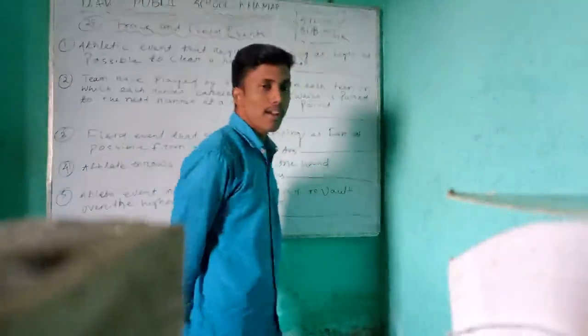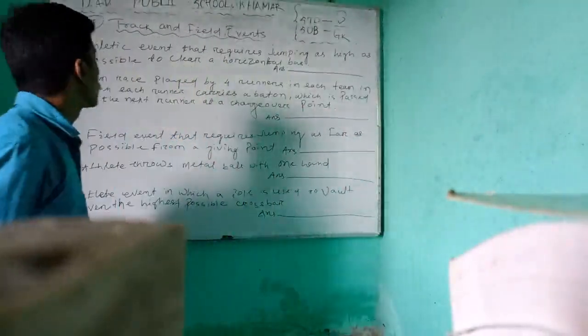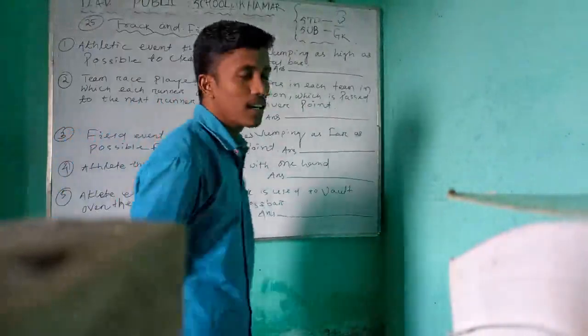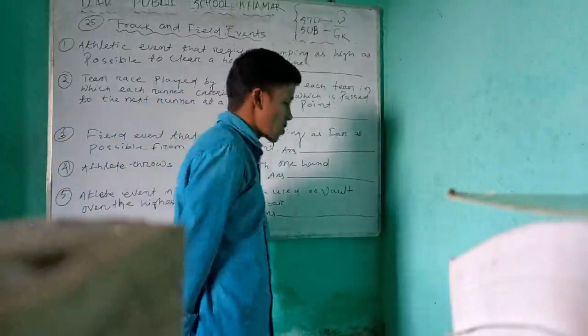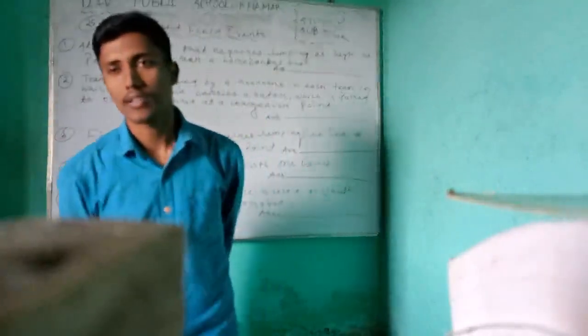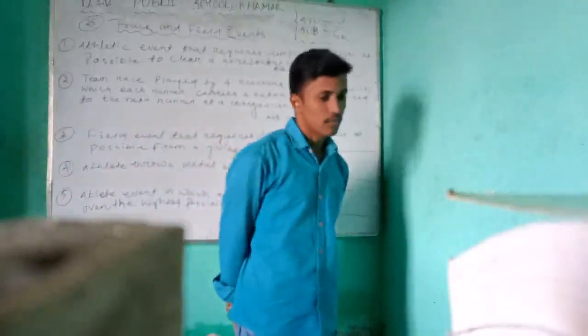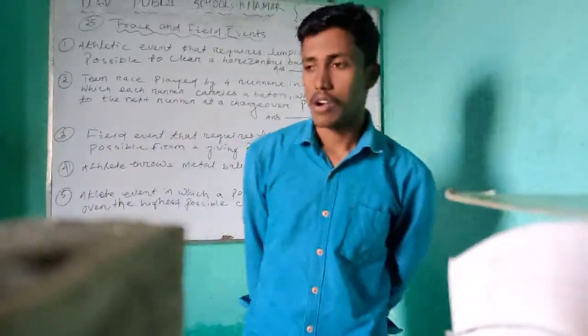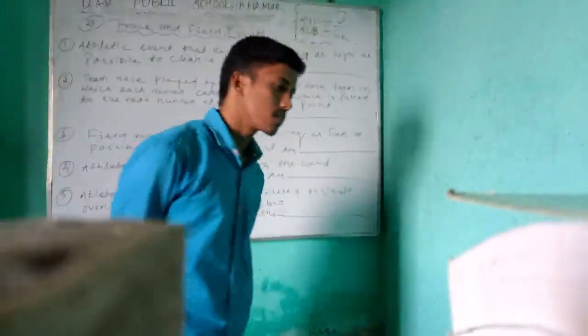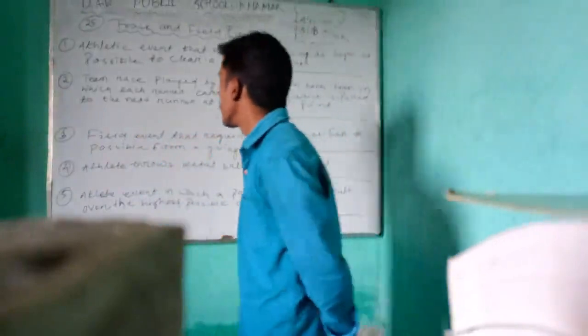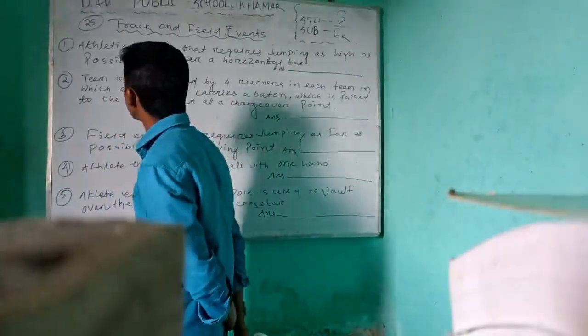In the previous year we celebrated the annual sports day and drew many types of tracks in the field. We arranged many types of competitions such as high jump, long jump, shot put, and running — 100 meters and 200 meters.